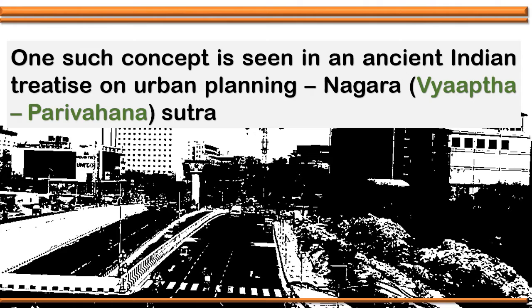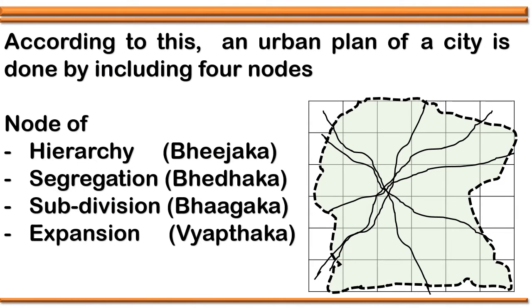Yes, there is one such concept in ancient India which is called Nagara Vyapta Parivahana Sutra. According to this, an advent plan of the city is done by including four nodes: Bhijaka, Bhedaka, Bhagaka, and Vyaptaka.